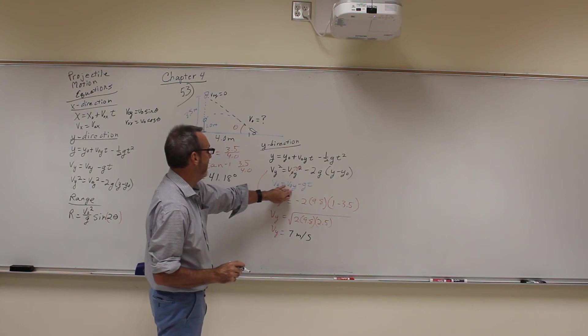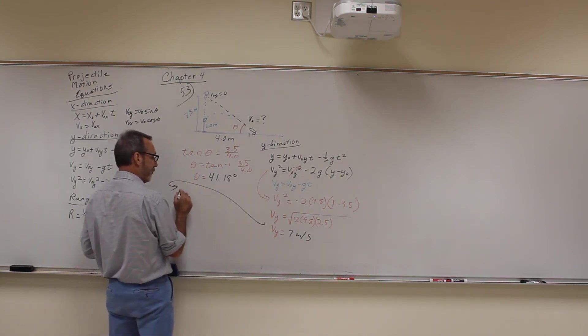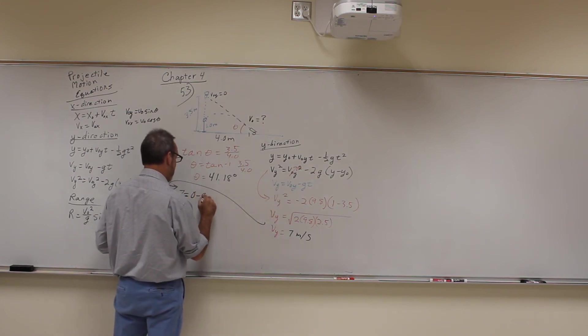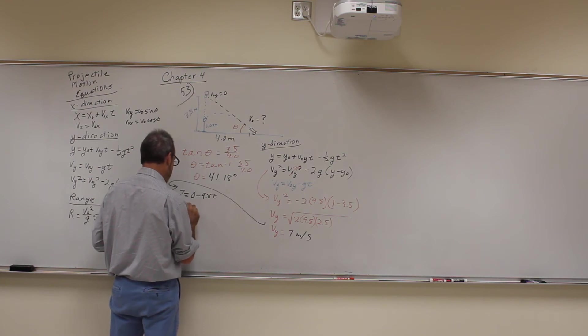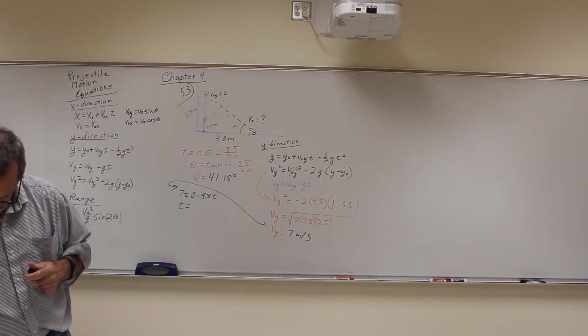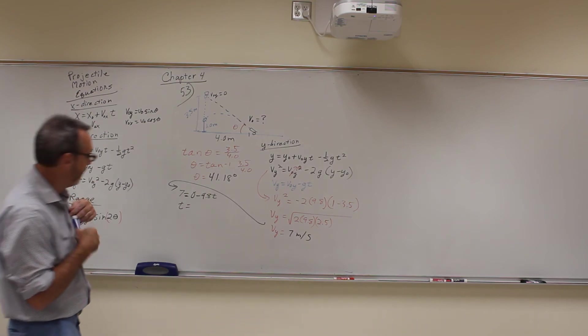And then I'm going to plug it back into here to get the time. So stay with me, I'm going over here. So Vy is equal to 7 is equal to V0y is 0 minus 9.8 times T. T is going to be 7 over 9.8. And you get 0.714 seconds.